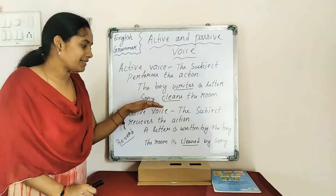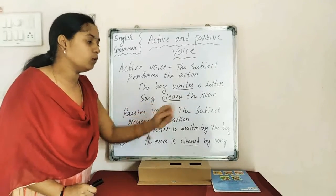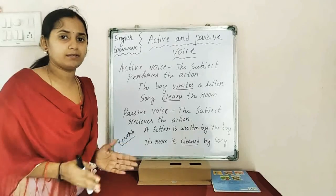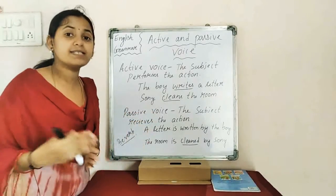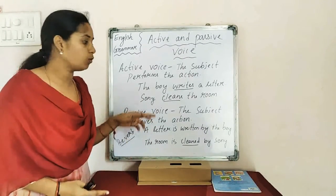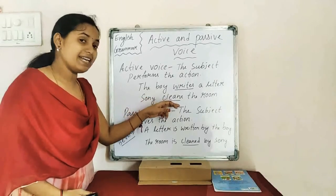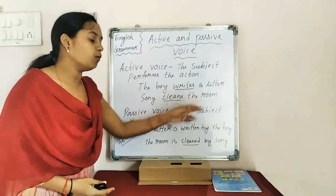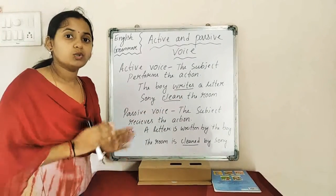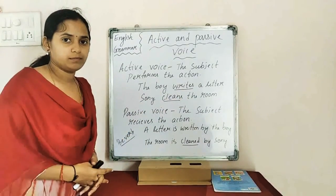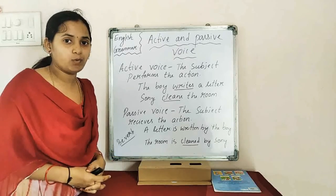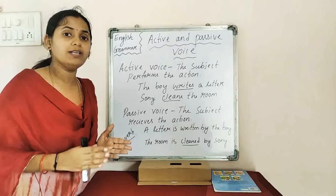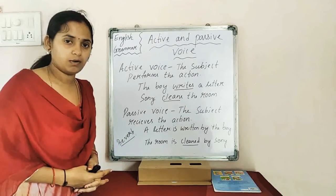Moving to the next example: 'Soni cleans the room.' The subject is doing something. So, Soni is the subject, 'cleans' is the VS form of clean, and the room is the object. This is in the active voice because the subject is doing something.